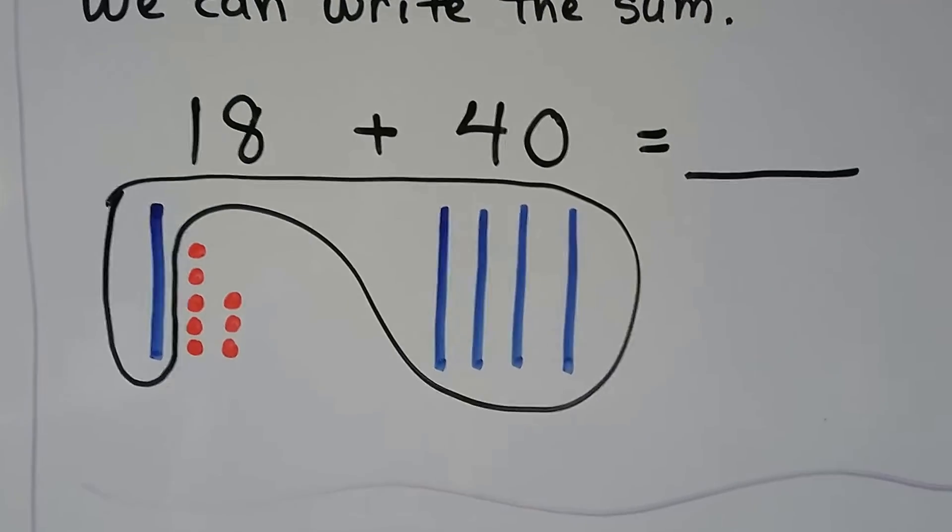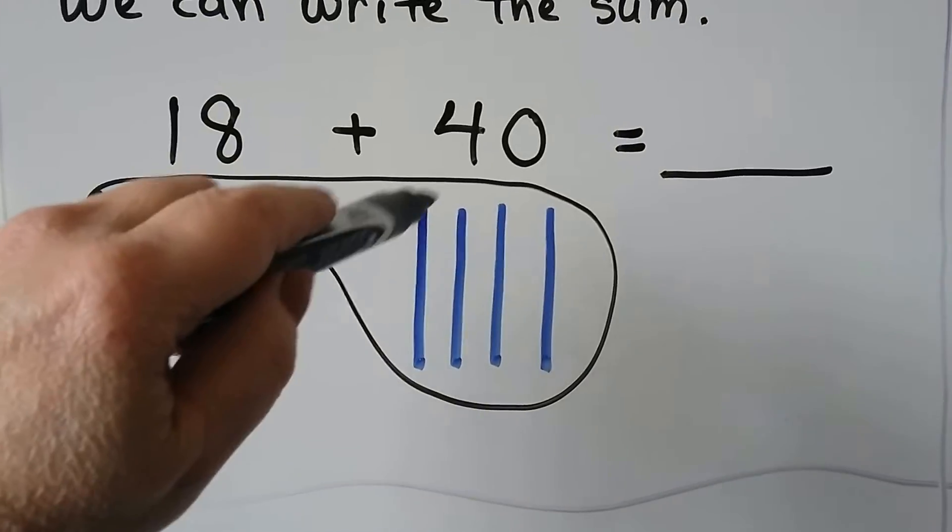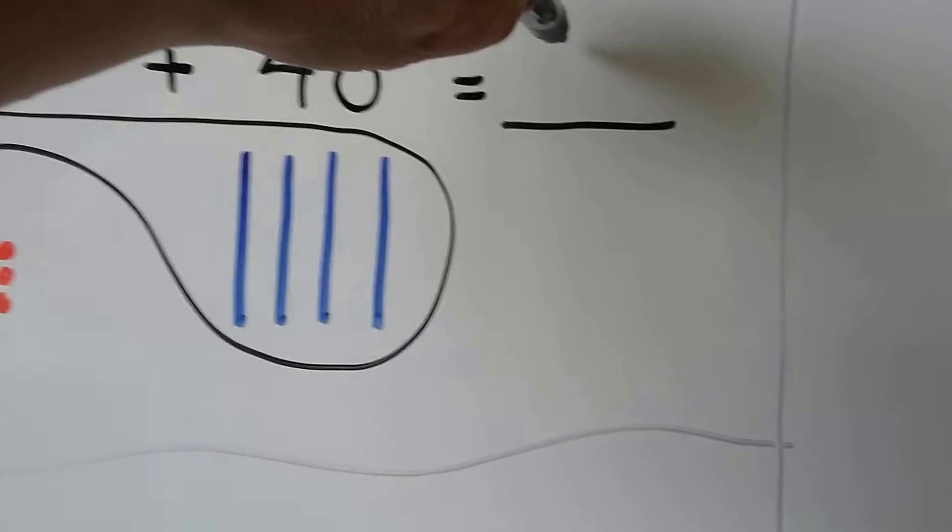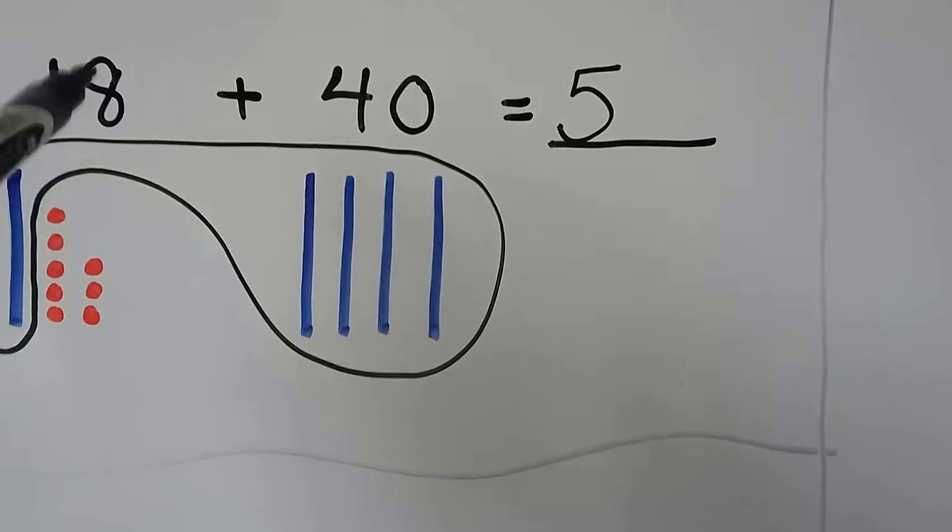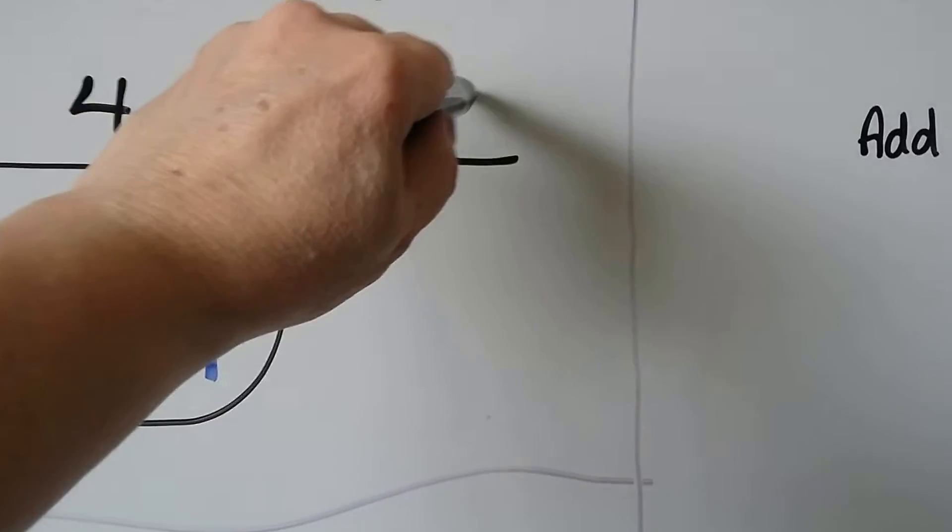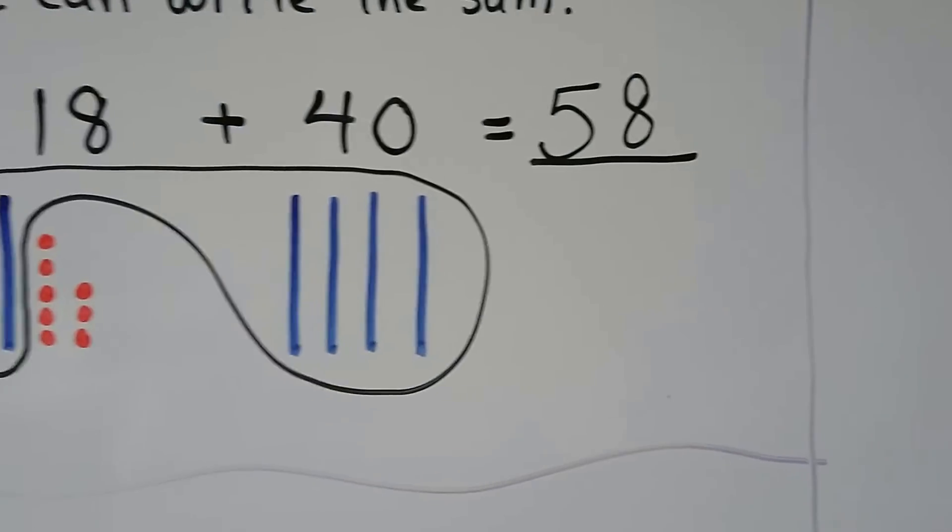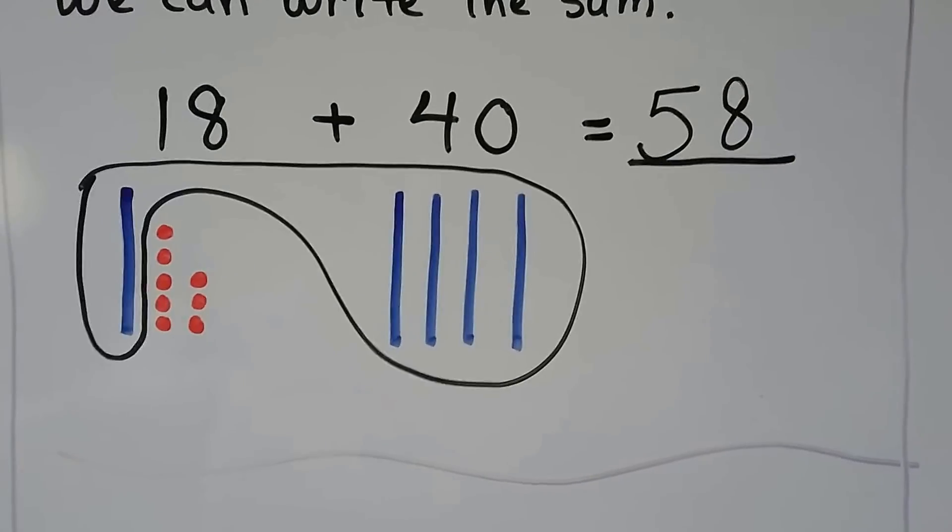The 1s stay outside, and we have 1, 2, 3, 4, 5 tens, and we have the 8 ones. 18 plus 40 is equal to 58.